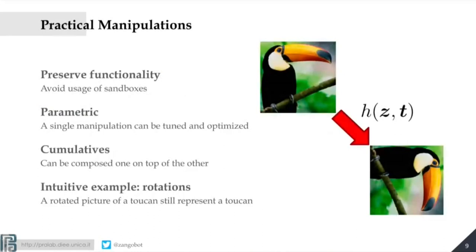What are these practical manipulations? They preserve functionality — you throw out all sandbox techniques — and they are parametric with parameter T. Given a manipulation H and T, I'm basically saying: modify this sample in this way, described by H, with parameters T — inject this content inside my sample. These manipulations are cumulative: you can stack them together, applying H once, twice, three, four times, because they are all functionality-preserving regardless of how many times you stack them.